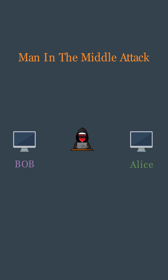When Alice sends a message to Bob, the hacker intercepts the message and sends an acknowledgement back to Alice, pretending to be Bob. Alice thinks that Bob received the message. The hacker can then send a modified message to Bob, pretending to be Alice. Upon receiving the message, Bob sends an acknowledgement back to the hacker. The hacker may or may not modify the message — he might be there just for eavesdropping.